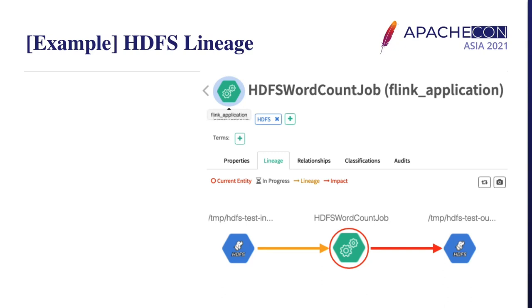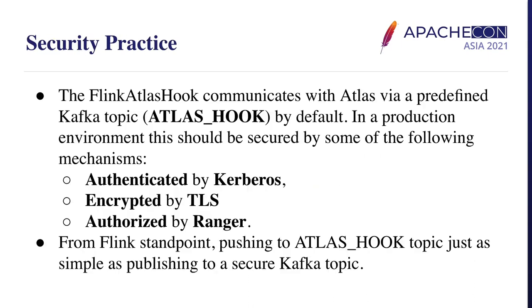Now we are looking at an HDFS source and sink example. I used a basic WordCount streaming job to produce this graph. As you can see, the first icon on the left is the input file in HDFS, and the second icon on the right is the output file, also stored in HDFS. Now we have all the information needed for this integration project.